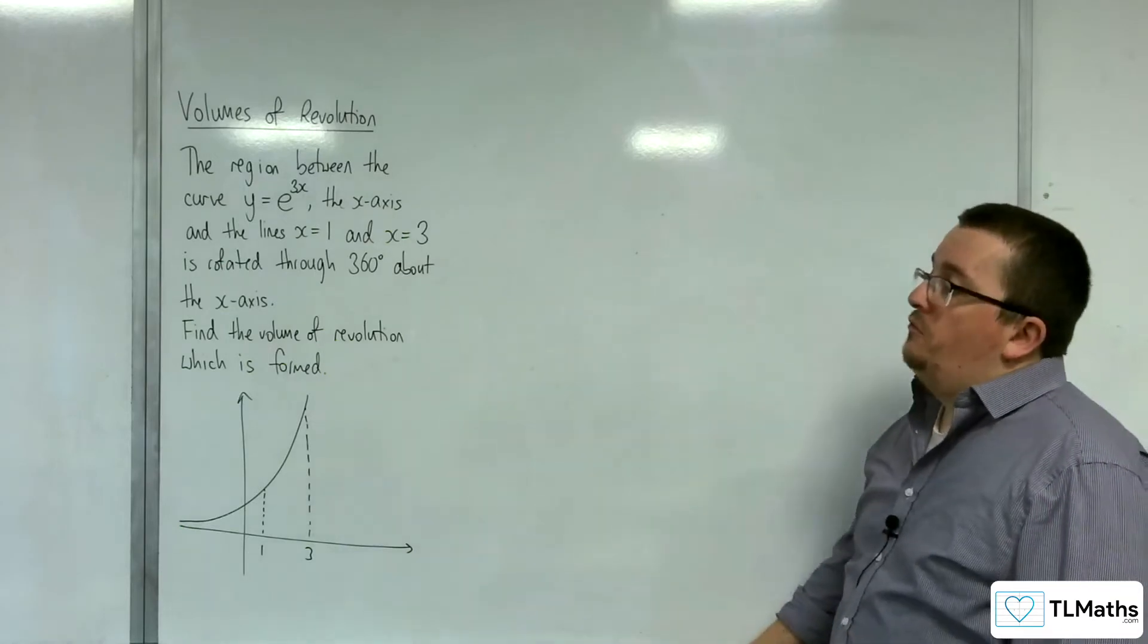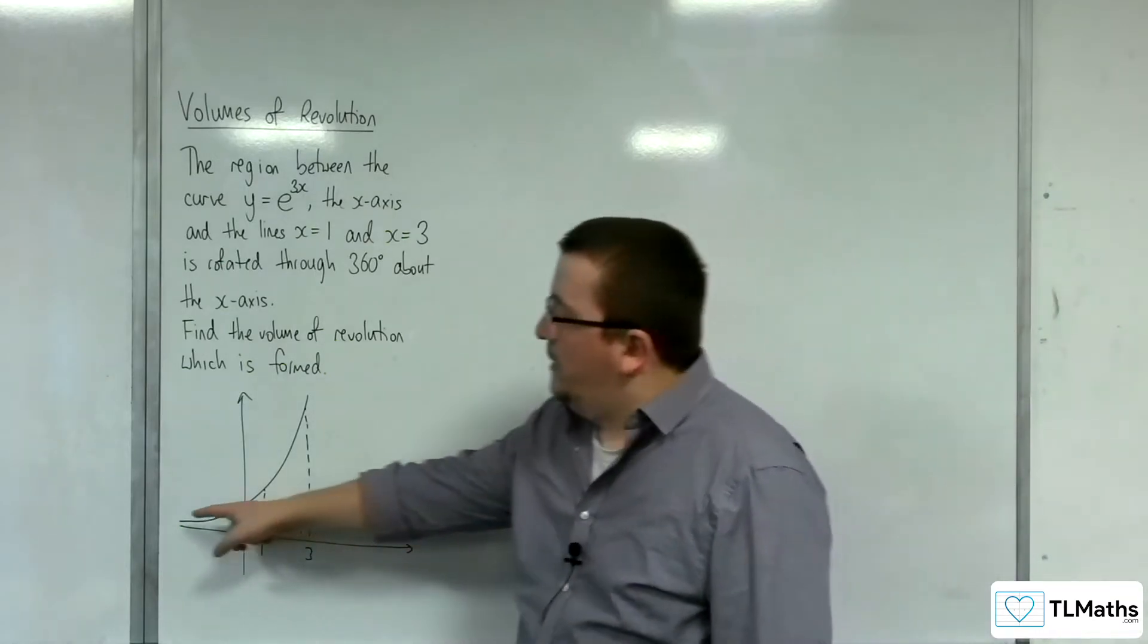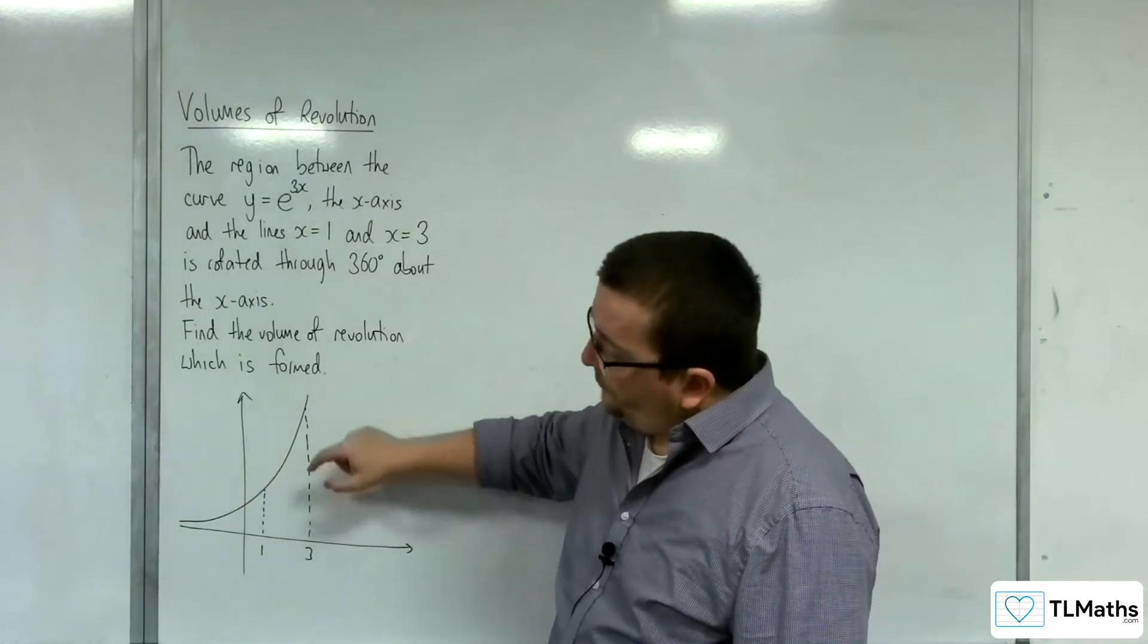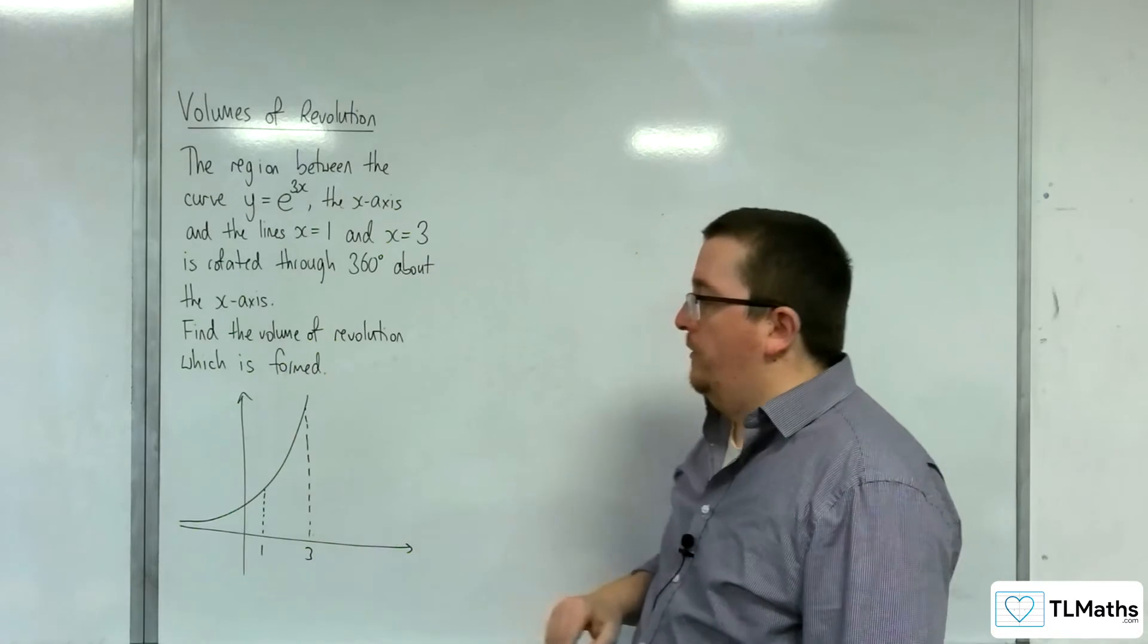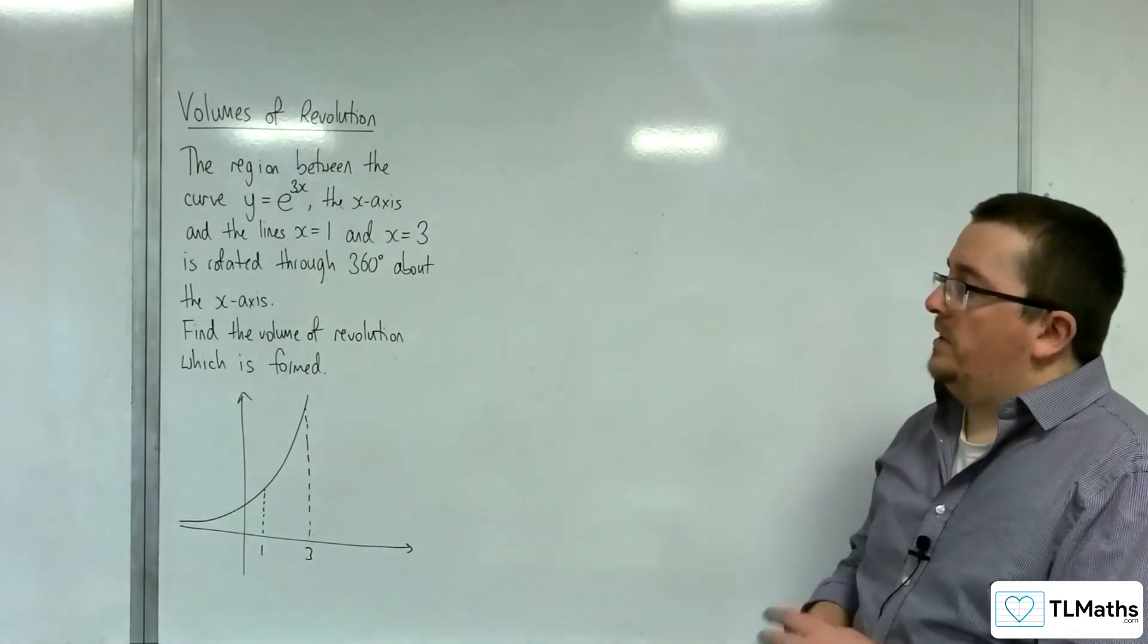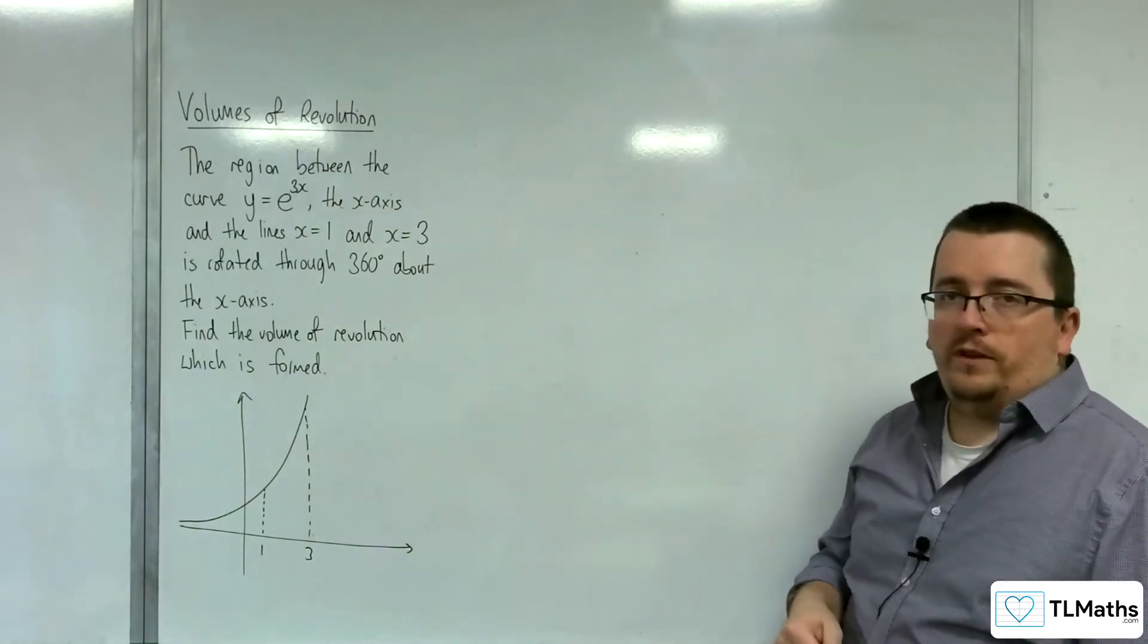Find the volume of revolution which is formed. So here is the curve e to the 3x, and we're going to rotate just that piece around the x-axis and determine the exact volume that is formed.